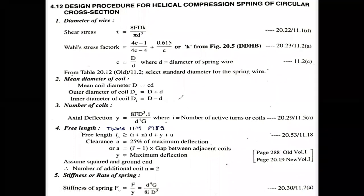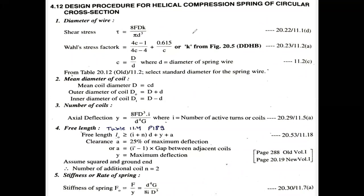This is the procedure for the helical spring — how to design the spring. The first step is to find out the diameter of the wire. To find the diameter of the wire, you use the shear stress formula. This equation is derived and is also in the data book at equation 11.1d. F, mean diameter, and shear stress will be given; you need to calculate the diameter.